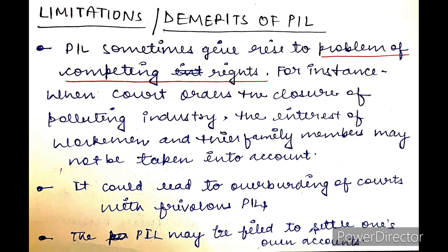Limitations या demerits of PIL — First, PIL sometimes gives rise to the problem of competing rights। जैसे अगर court order आ जाए कि एक industry को बंद कर दिया जाए क्योंकि वो pollution फैला रही है, तो कहीं न कहीं जो person उस industry को चला रहा था उसके rights hinder हो रहे हैं — क्योंकि उसे अपना business करने का right था। तो यहां competing interests की situation आ जाती है। Second, it could lead to overburdening of courts with frivolous PILs — हमारी court पहले से ही बहुत ज़्यादा burdened है, और लोग बिना मतलब भी PIL file करने लगे हैं, जिससे judiciary पर और बोझ पड़ रहा है।